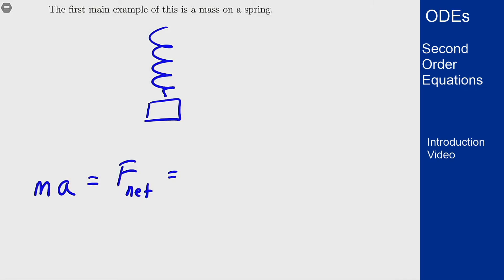The mass of this object times the overall acceleration should equal the net force, and there's two factors that sort of come into play with this net force. We're going to ignore the gravity factor here and wrap it into how we define our position, so that where the object hangs naturally under just gravity is our zero for position.